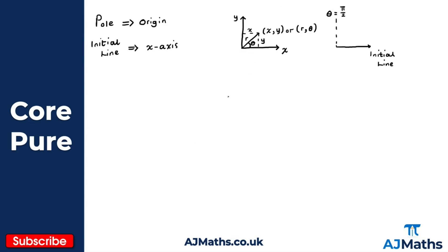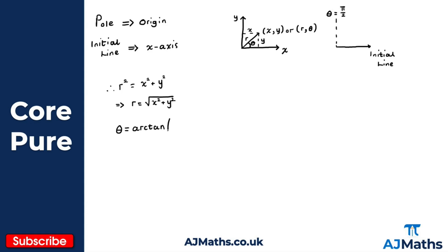Using basic applications of Pythagoras and trigonometry, we can denote a few things. r squared is equal to x squared plus y squared, which is basic Pythagoras. Therefore r is equal to the square root of x squared plus y squared. And we can also see that theta would be arc tan of y over x — that is, theta equals the inverse tan of y over x.